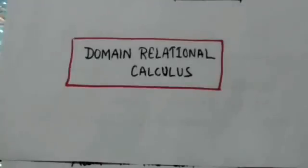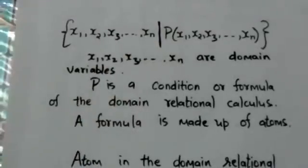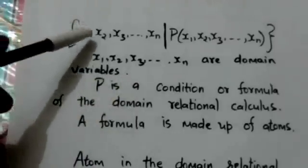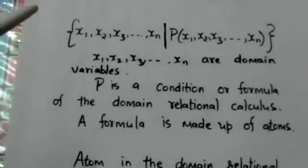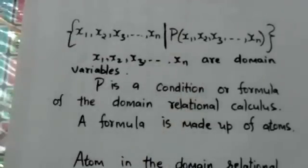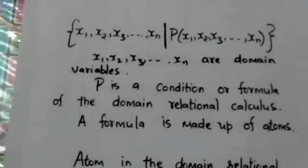Hello friends, welcome back. In this tutorial we will study about domain relational calculus. In domain relational calculus, domain variables are used. Domain variables take on values from an attribute's domain. An expression in the domain relational calculus is of this form, where x1, x2, x3 up to xn are domain variables, and P is a condition or formula of the domain relational calculus.